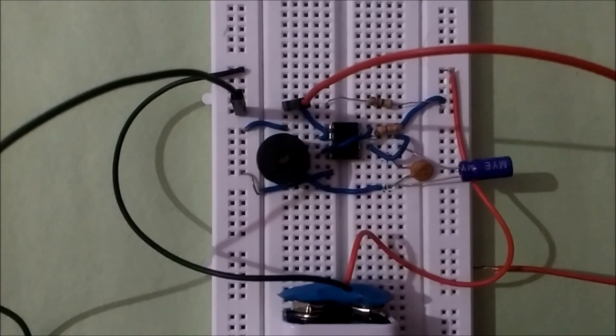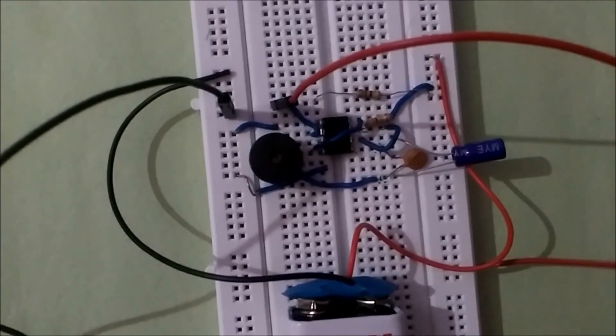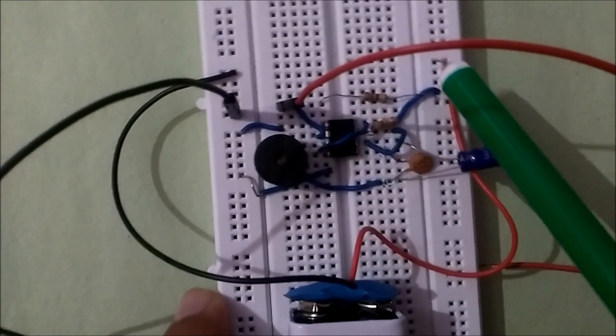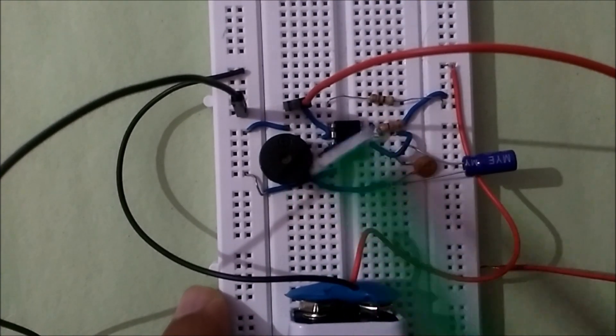Now buzzer is connected between 3rd pin and ground because 3rd is the output pin. And then your 4th pin is directly connected to your VCC supply, or we can say 4th and 8th are shorted together.